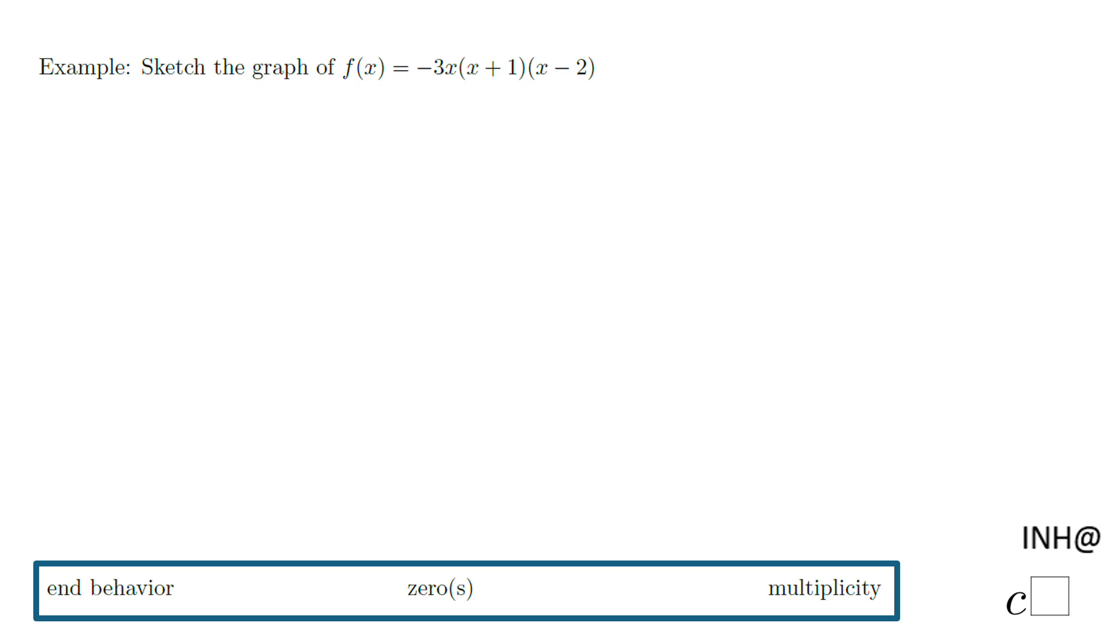Welcome or welcome back! I need help at C squared. In this example, we're going to sketch the graph of this polynomial function. This polynomial function is in the factor form, and for that reason we're going to use these three things: the end behavior, the zeros, and the multiplicity.